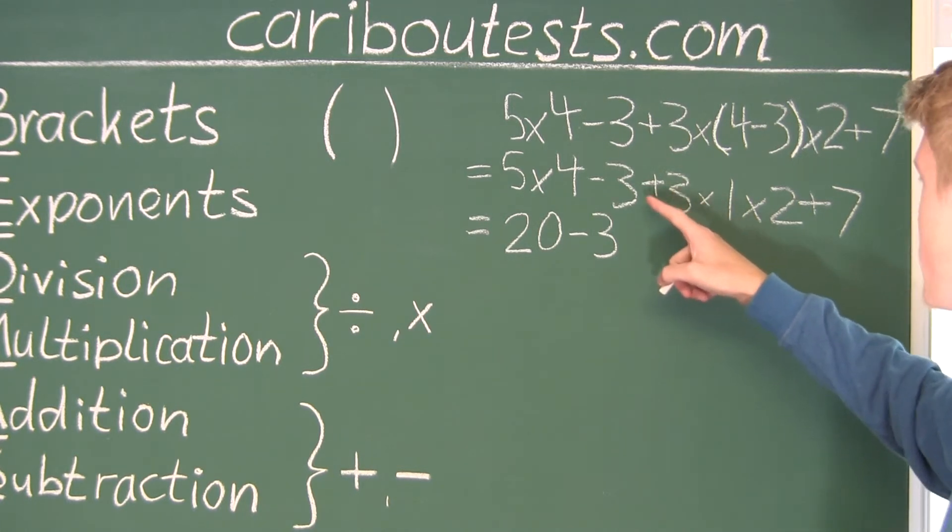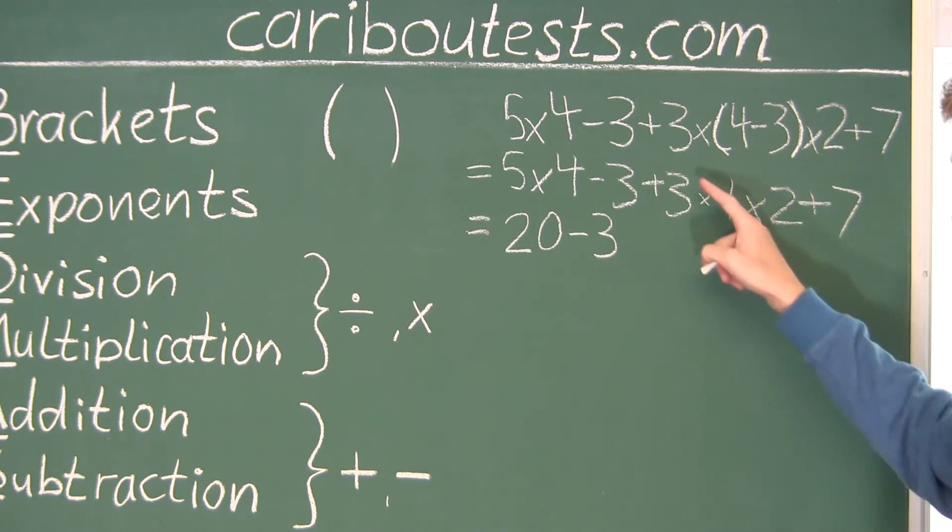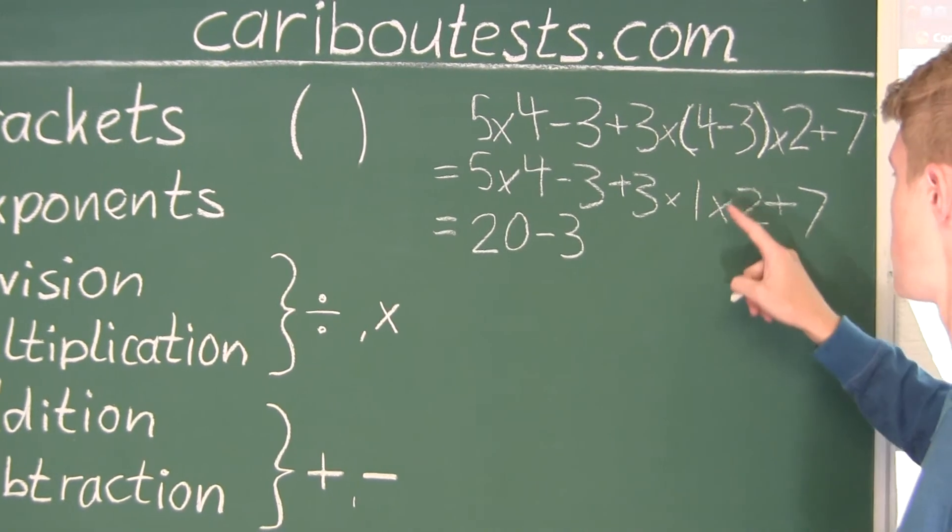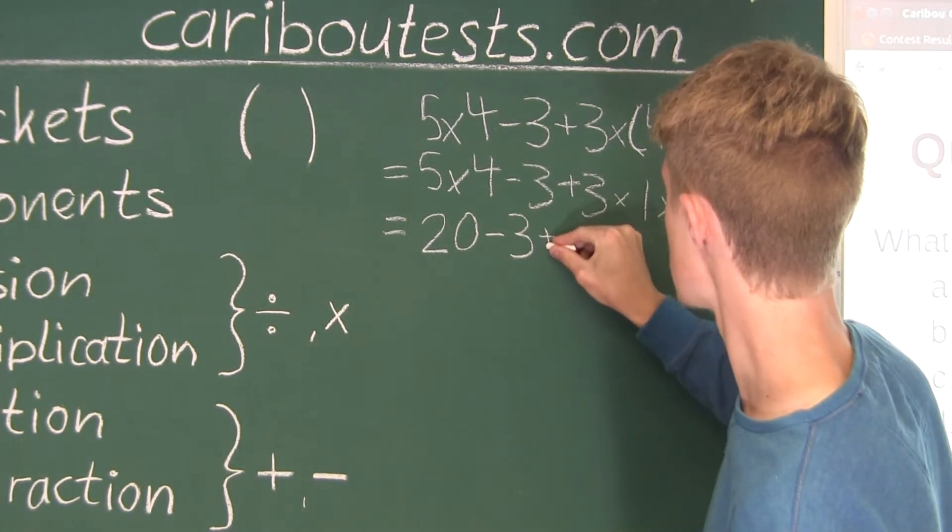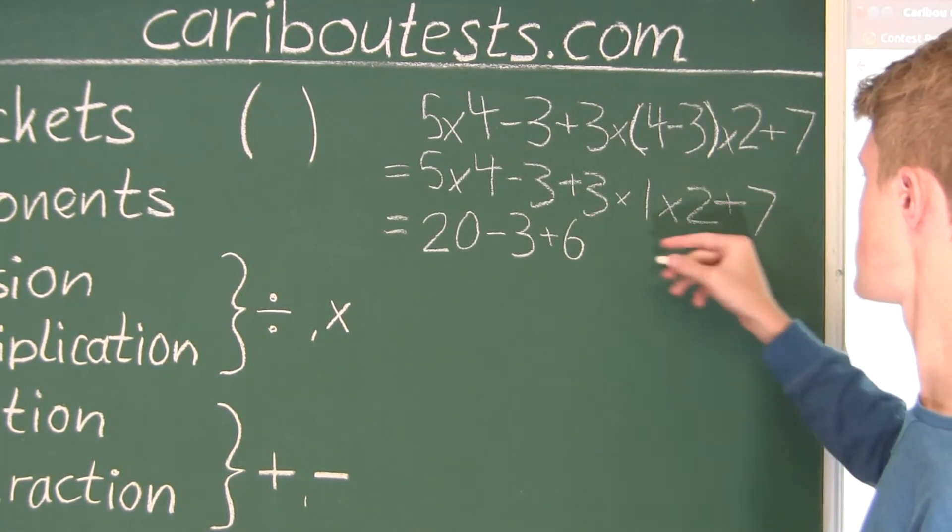Alright. And now, we have plus, but then we have plus 3 times 1 times 2. So, we would have to multiply out those first. So, 3 times 1 is 3, and 3 times 2 is 6. So, we have plus 6, and then, finally, we have plus 7.